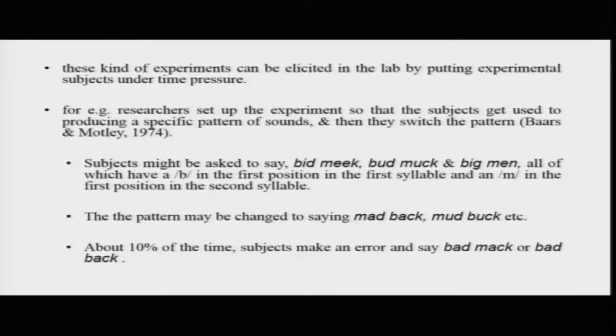These kinds of errors can be elicited in the lab by putting experimental subjects under time pressure. You can give participants forty pictures to name in two minutes, with pictures appearing for only 100 to 200 milliseconds — a highly time-pressured task. Obviously the participant will make some errors. Sometimes the errors could be of the semantic kind, sometimes they could be sound exchanges. You would then know where in the process the error occurred.